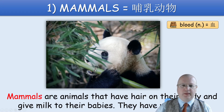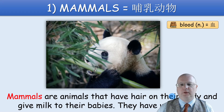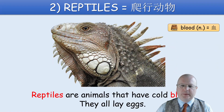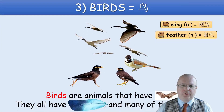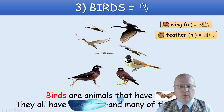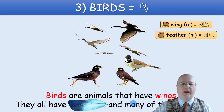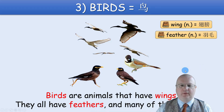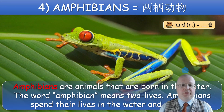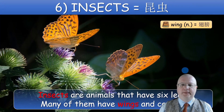You can read it together with the class. Then reptiles. Then birds. Some words are covered — this is a reading technique. When you read together with the class, you can elicit responses from students: birds are animals that have wings, they all have feathers and many of them can fly. Then amphibians, fish, and insects.